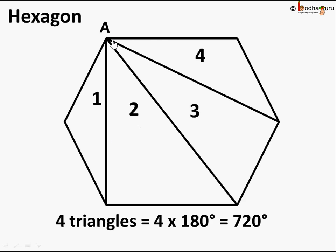The same applies to a hexagon. From point A, if we draw all the diagonals, we find there are four triangles in this hexagon. So the sum of interior angles of the hexagon is four times 180 degrees, which equals 720 degrees.